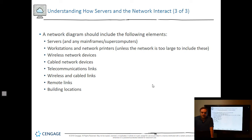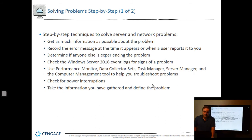A network diagram should include many different elements: servers, workstations, wireless, cabled, telecom, wireless and cabled links, remote links, and building locations. Don't try to fit all this into one document — it's impossible to fit it all in one document and have anyone be able to read it. Keep things as simple as possible; you might want four, five, ten, or fifteen different ones. For instance, telecom should be its own document, servers and workstations may be their own document, locations should have their own document, and buildings should have their own document.